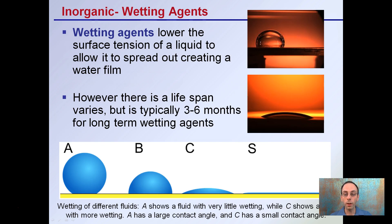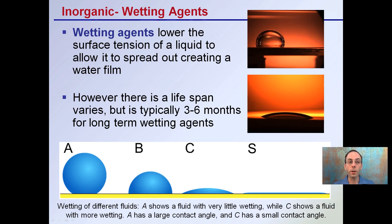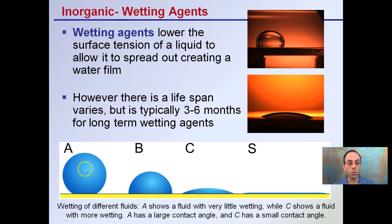The last inorganic component is wetting agents, and these are very important. They lower the surface tension of a liquid, allowing it to spread out and create a water film. Without wetting agents, you have a large water droplet; adding wetting agents causes it to form a sheet. We can see comparisons here labeled A, B, C, and S showing the wetting of different fluids. A shows fluid with very little wetting, while C shows a fluid with more wetting and a greater contact surface. C has a small contact angle allowing it to spread out, and S shows that ultimate sheet.